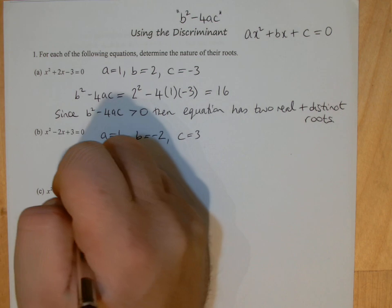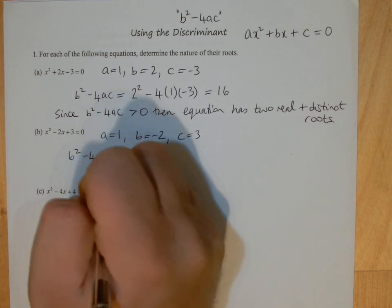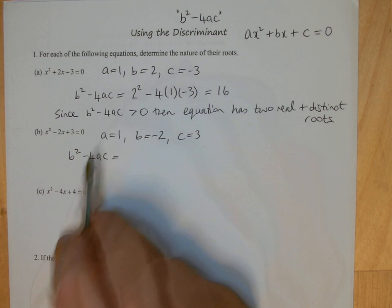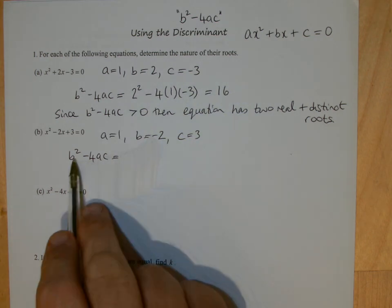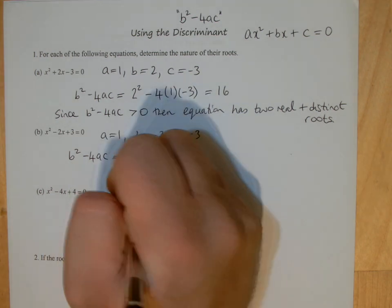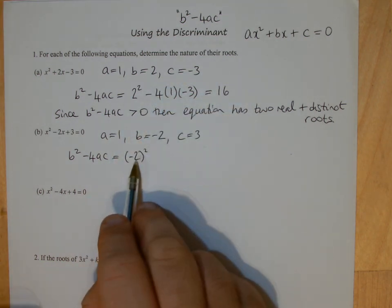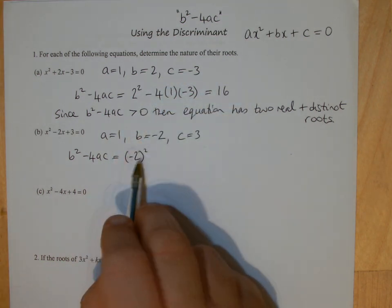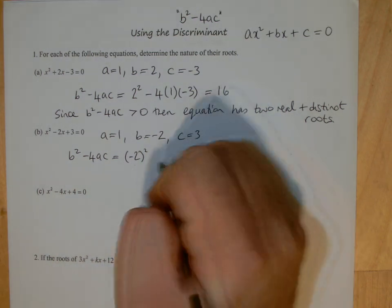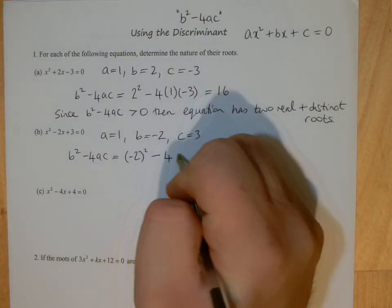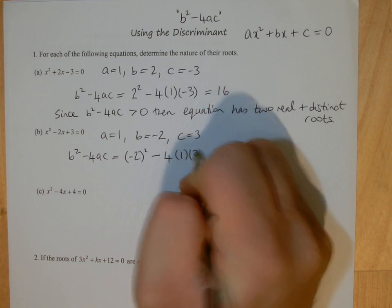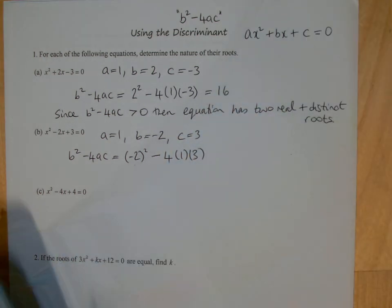So if I do b squared minus 4ac this time, well b is negative two, so we've got to square it. So let's remember to put it in a bracket, because when you square a negative, it becomes positive, but you should put it in a bracket, otherwise the calculator won't work it out properly. Minus 4ac, it's 4 times 1 times c, so let's just do that on the calculator, just to be sure.